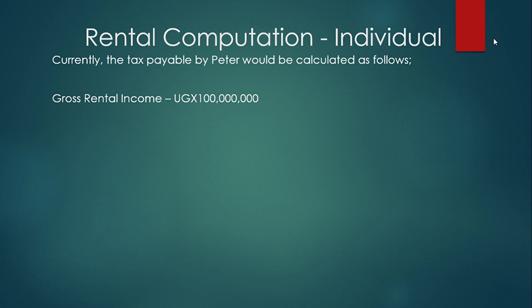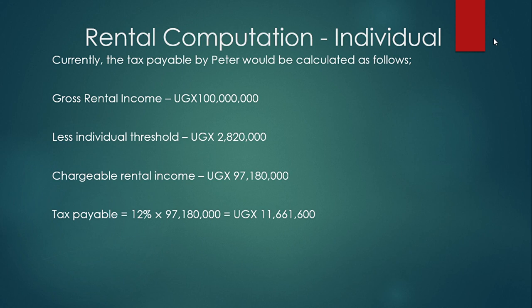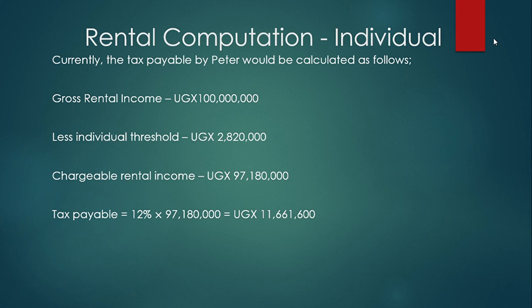We deduct the individual threshold of 2,820,000 shillings and apply the flat rate of 12 percent. So we take off the threshold and the chargeable rental income becomes 97,180,000 shillings, on which we apply 12 percent. Peter's tax payable is therefore 11,661,600 shillings. That is what will appear in Peter's provisional tax return as his liability. Peter will have to file by 31st December 2022 and begin making quarterly payments by 30th September 2022.